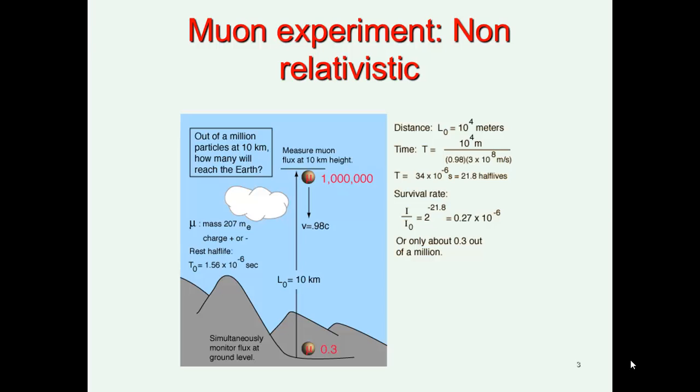And let's say we have about a million muons forming. Now, if we know the half-life and we know the speed, it means that the time taken to reach planet Earth should be 34 times 10 to the minus 6 seconds, which is approximately 21.8 half-lives. So if I want to find out the survival rate, I do 2 to the power of minus 21.8. That gives me 0.27 times 10 to the minus 6.